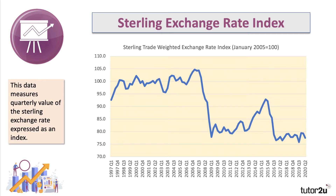It's often said that a fall in the exchange rate can help to improve a country's trade balance. This chart shows the sterling exchange rate — it's a trade-weighted exchange rate index from 1997 onwards, with 2005 as the base year value of 100. This data shows the quarterly value of sterling against other currencies. You can see there have been a couple of times, 2008 and again 2016, where there's been quite a sharp fall — a depreciation in the external value of sterling. Does that necessarily help to improve the UK trade balance in goods and services?